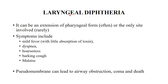Laryngeal diphtheria. It is most often an extension of the pharyngeal form; isolated laryngeal diphtheria is very rare. Symptoms include mild fever, hoarseness, dyspnea, barking cough, malaise, and breathing difficulty, because the pseudomembrane leads to airway obstruction. If untreated, the patient may become comatose or die due to asphyxiation.